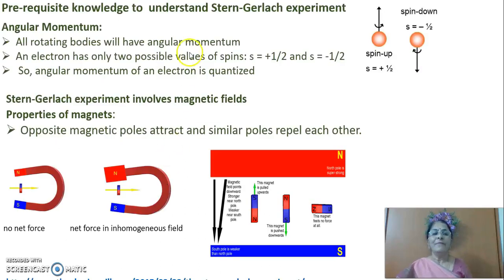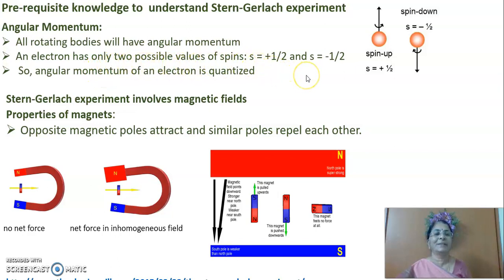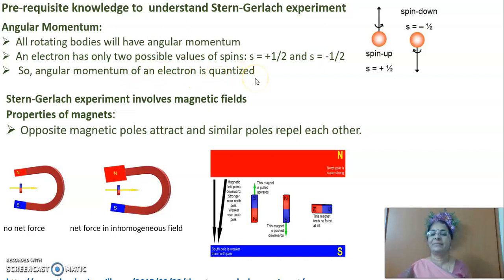All of us know that all rotating bodies will have angular momentum. An electron has only two possible values of spin, either clockwise or anticlockwise. So angular momentum of an electron is quantized. As the Stern-Gerlach experiment involves magnetic fields, let us see the basic properties of magnets.